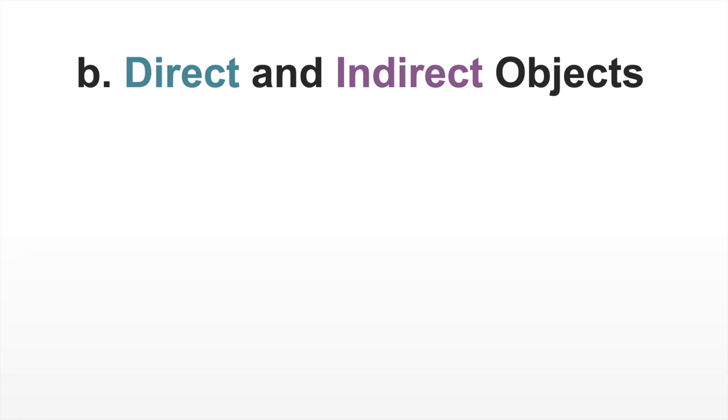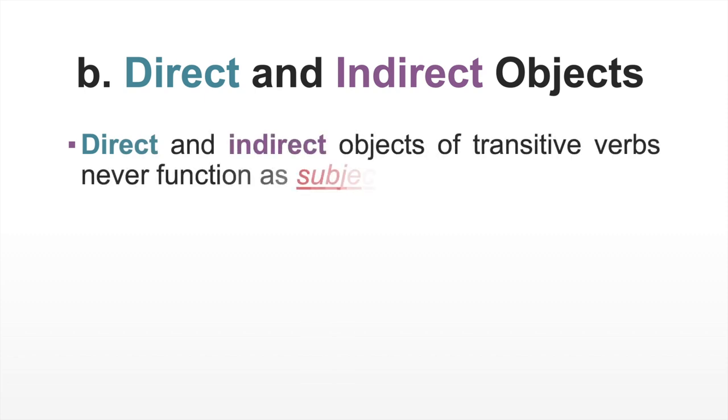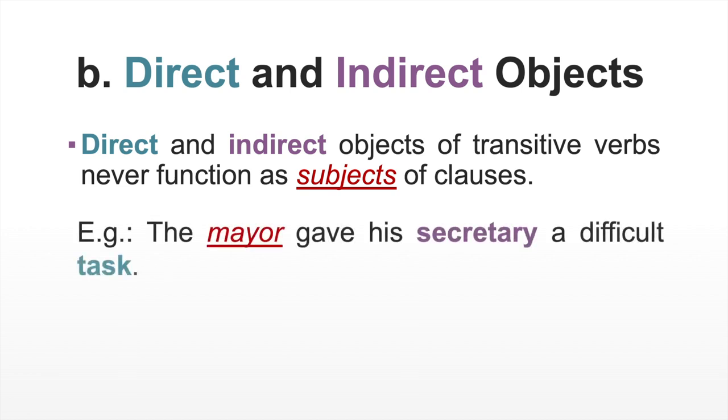Next, let's discuss direct and indirect objects in a sentence. That is, direct and indirect objects of transitive verbs never function as subjects of clauses. Let's look at two examples here. The mayor gave his secretary a difficult task. Notice that mayor is the simple subject. Secretary is the indirect object and task is the indirect object in this sentence.